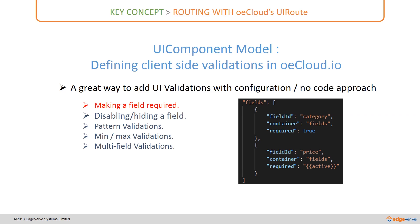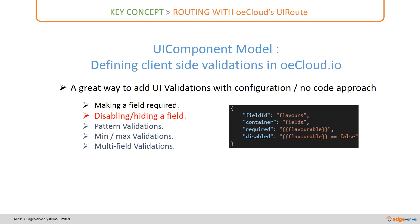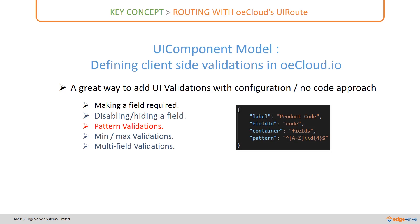It is also possible to make a field required only when a certain option is clicked. For example, 'price' should be required when the field 'active' is set — this is a data-bound required validation. It is also possible to disable or hide a field; for example, enabling 'flavors' only when 'flavorable' is checked. It is also possible to implement pattern validations — for example, requiring 'code' to follow the pattern of one uppercase letter followed by four digits.